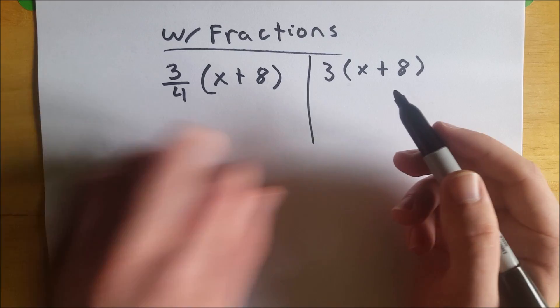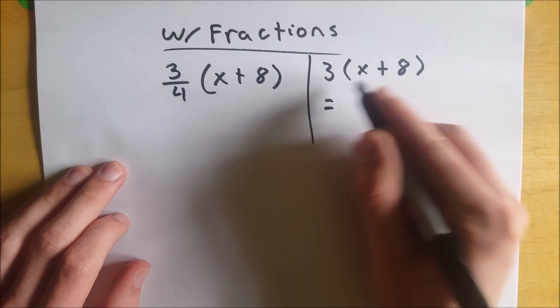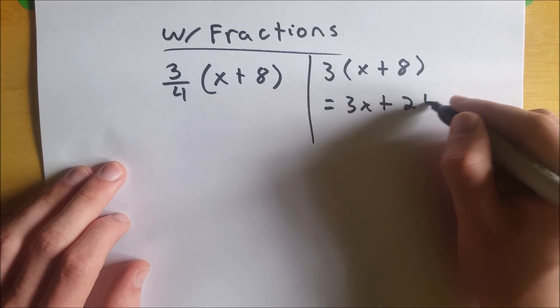Well, the distributive property tells us we just need to distribute the 3 throughout the parentheses. So this is equal to 3 times x plus 3 times 8, which is 24.